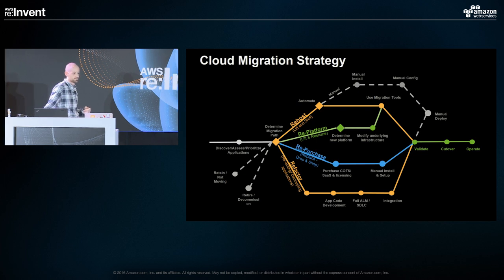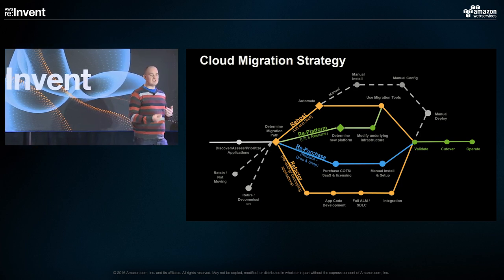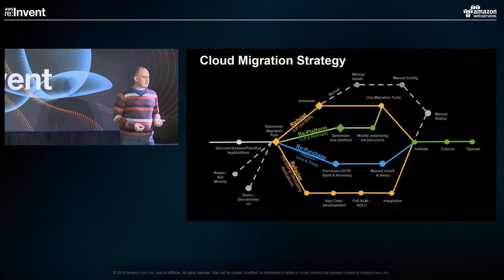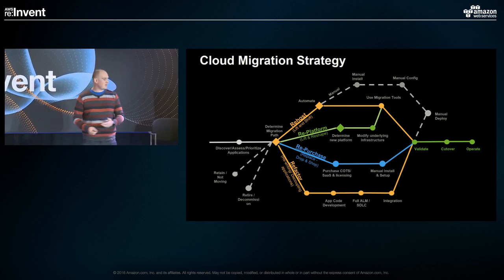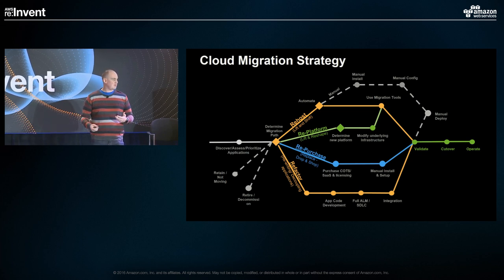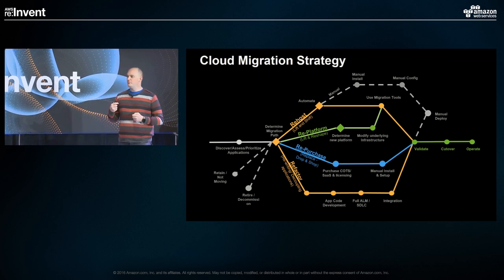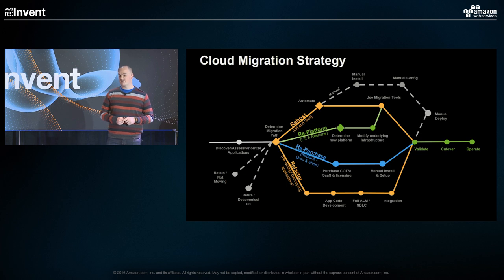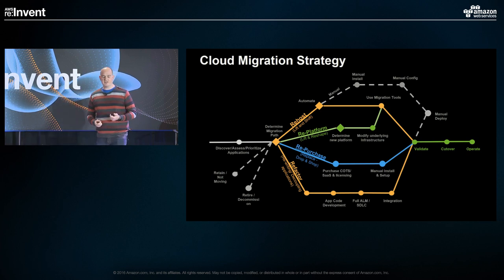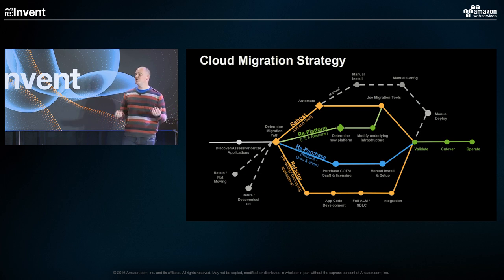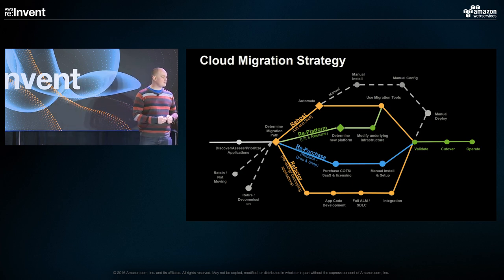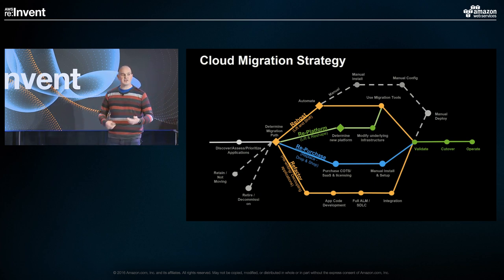The path you take on your migration process determines what tools you want to use. For a simple re-host or re-platform, you might look at block-level moving from on-premises into AWS. For larger changes involving refactoring, you might look at other platforms and tools that more effectively produce the environment you want — right-sizing or using features like Lambda and RDS as managed services. This decision needs to be made before you start your migration. We see with our customers a lot of times that they don't properly define their migration strategy before invoking the workflow.